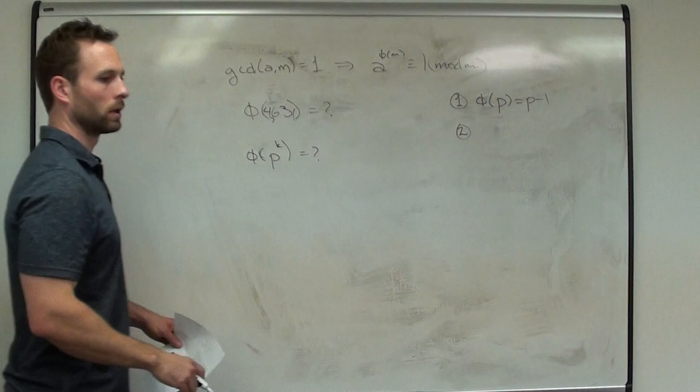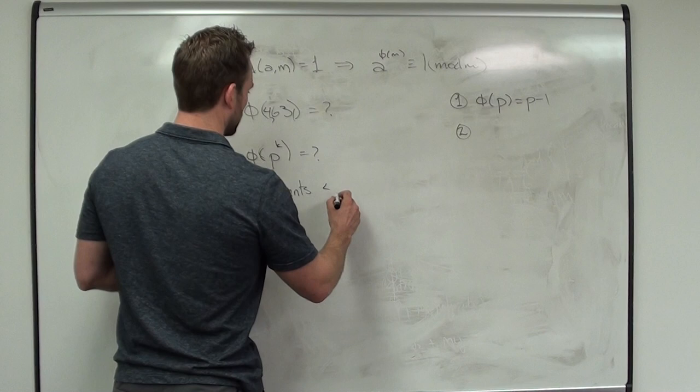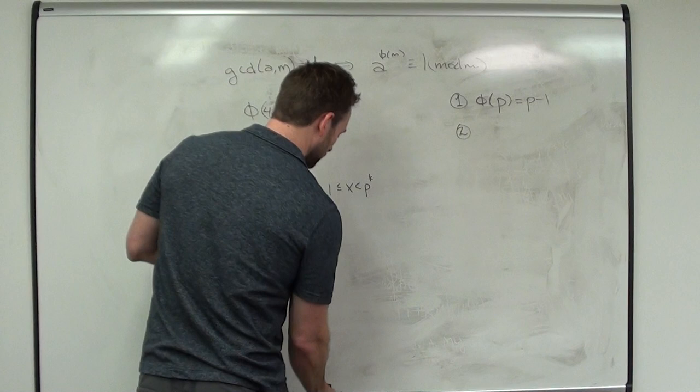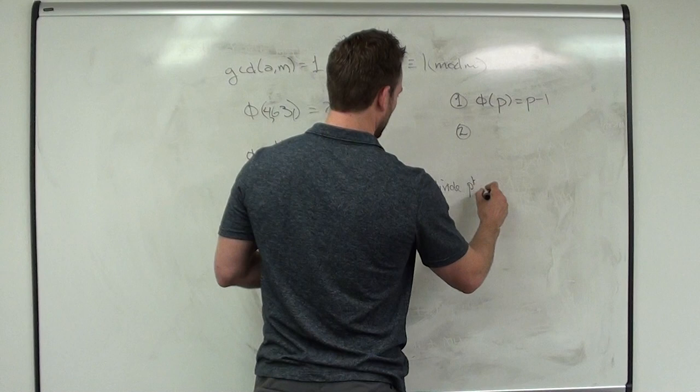The nice thing is we can list the elements: the elements with 1 ≤ x ≤ p^k that divide p^k. We can enumerate this list pretty nicely because p is a prime and we're multiplying by itself all the way. So the elements that share a common factor with p^k are: p, 2p, 3p, ... up to p^(k−1)·p, which is p^k.